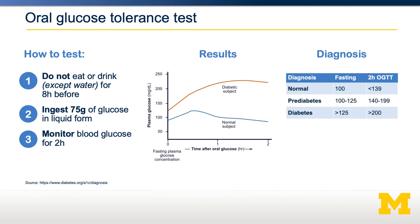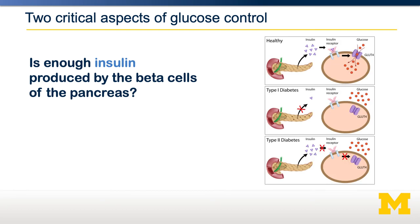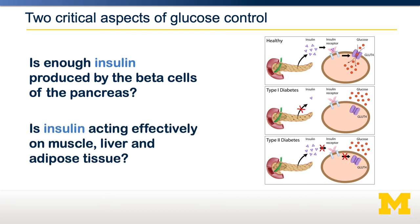Somebody whose blood glucose levels stay above 200 mg per deciliter 2 hours after ingestion is diagnosed as diabetic. There are two aspects for which this can go wrong. One is whether enough insulin is produced by the beta cells of the pancreas – this is the case for people with type 1 diabetes, who are unable to produce sufficient insulin. However, the majority of people with diabetes have type 2 diabetes. They are generally able to produce sufficient amounts of insulin, but their body does not respond to insulin, making them insulin resistant. In either case, this results in glucose staying in the blood and not being able to get into the cell.